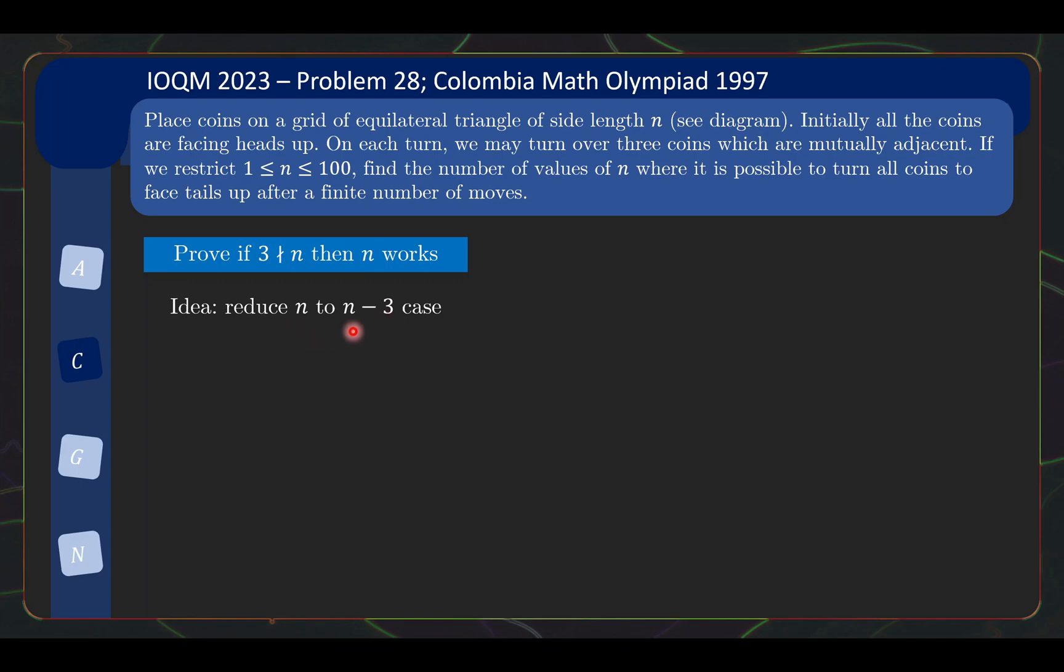In other words, given the solution to n minus 3 for flipping all the coins, can I construct a solution for n? And in this case, it's not too difficult to figure out the solution.